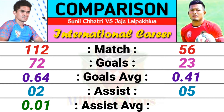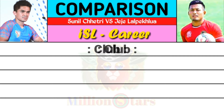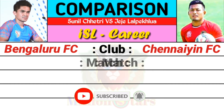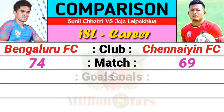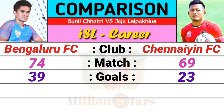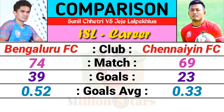ISL career: Sunil Chhetri's club is Bengaluru FC, JJ's club is Jone FC, now the current club. Matches: Sunil is 74 and JJ is 69. Goals scored: Sunil is totally 13 and JJ is totally 23. Goals average: Sunil is 0.52 and JJ is 0.33. Assists: Sunil is 5, JJ is 7.